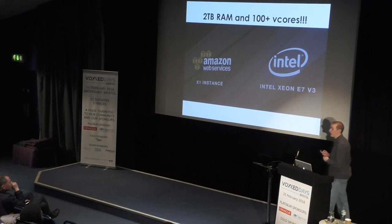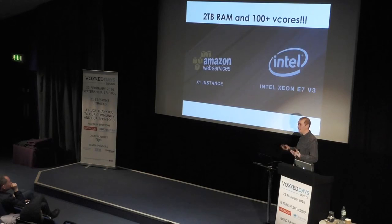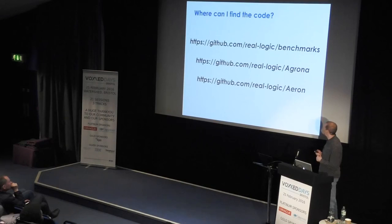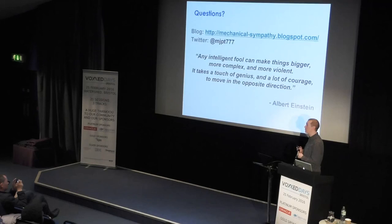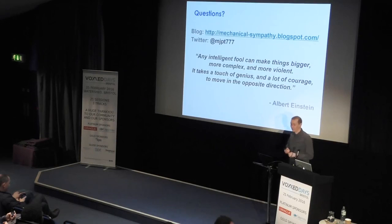In closing, Amazon are just about to release the X1 instances — 2 terabytes of RAM, hundreds of virtual cores. This stuff is going to become front and center in our lives as we go parallel. We just have to start caring about it at a lower level. The benchmarks I talked about are all available on GitHub, and the different data structures are in Agrona and Aeron — they're free to go get. Thanks everyone.